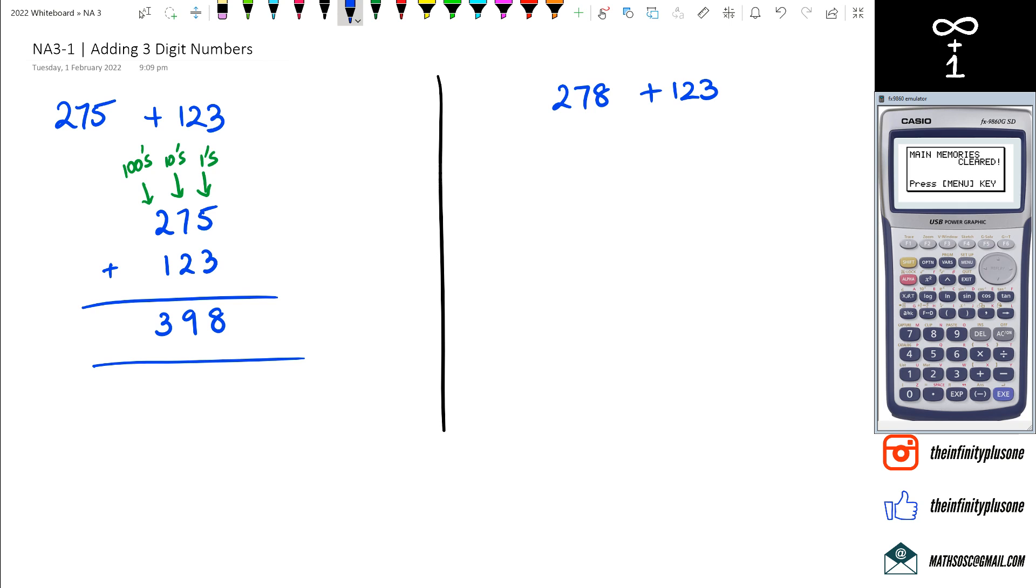However, when you look at the second example is where we start facing some difficulty. So how does this work? We want to put 278 and 123, and I guess the first thing you kind of do is okay, let's see, we've got ones column here, then we've got our tens and then we've got our hundreds column.